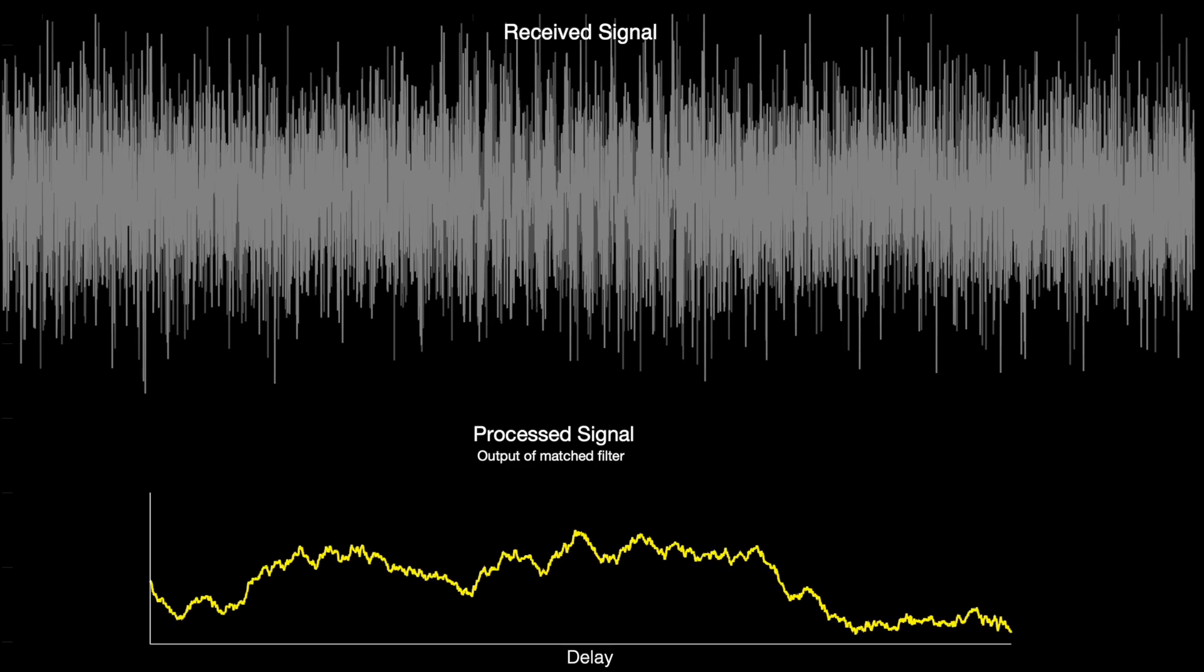Eventually, we get to a point where the raw signal is so corrupted with noise that the matched filter doesn't come back with a defined peak. It's a bit ambiguous where the peak is, or whether this peak is caused from noise or the actual pulse.